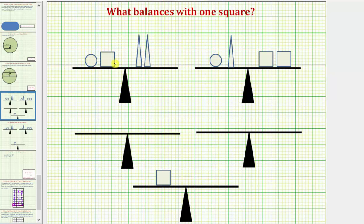Because we know one circle and one square balances with two triangles, let's begin by placing these on this first scale. Again, we'll place one circle and one square on the left and two triangles on the right.